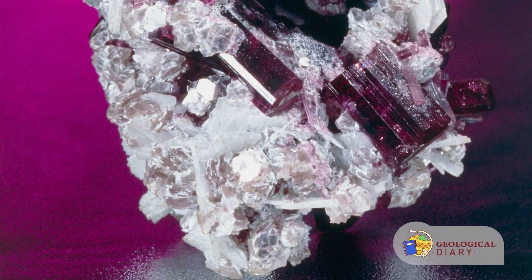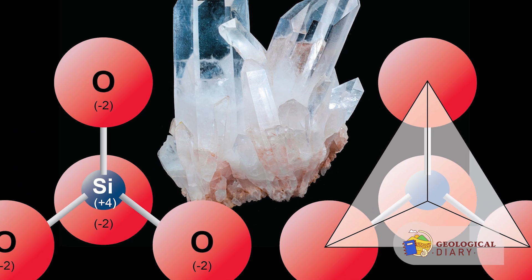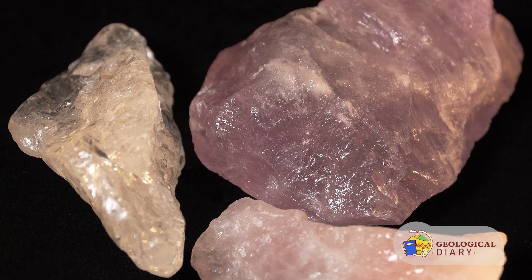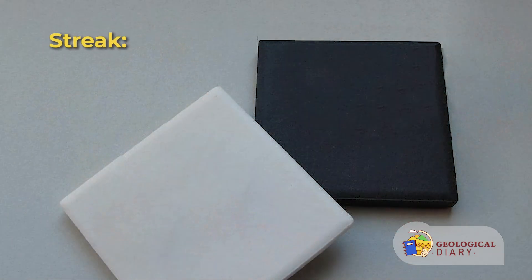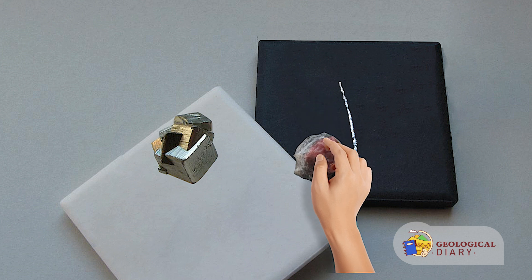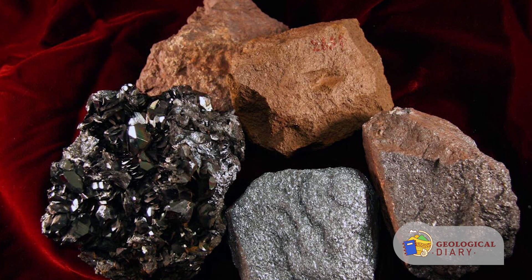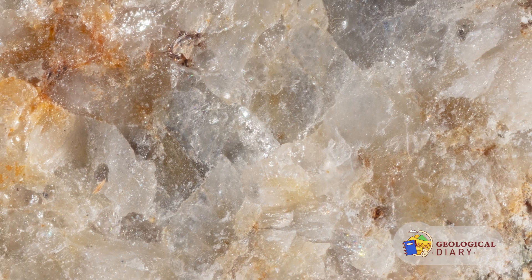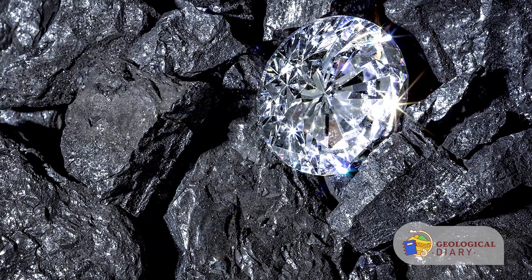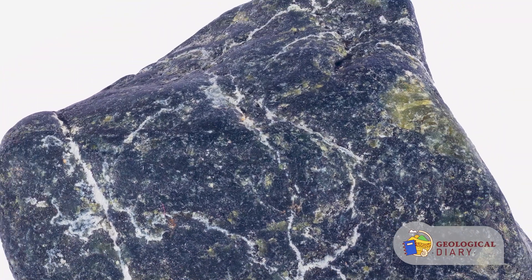Color is considered a diagnostic property of only a few minerals. Its use as a means of identification is often ambiguous and even misleading due to slight impurities in the crystalline structure — for example, quartz may exhibit several varieties including pink, purple, yellow, white, gray, and even black. A mineral streak is obtained by rubbing it across a streak plate of unglazed porcelain and observing the color of the mark it leaves. Metallic minerals generally have a dense dark streak, whereas minerals with non-metallic luster typically have a light-colored streak. Note that no streak is observed when using minerals harder than the porcelain streak plate.